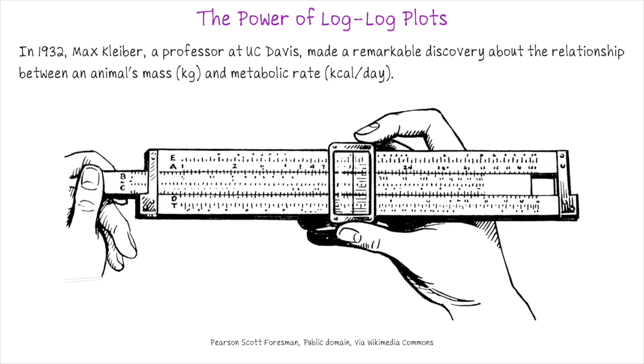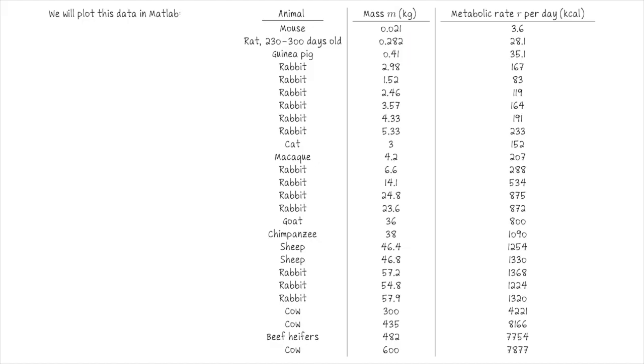The classic example of this comes from 1932 with Professor Max Kleber from UC Davis. He was a professor of animal husbandry and in particular as he was looking at animal data he realized that there was some relationship between the mass of an animal, say measured in kilograms, and what we call its metabolic rate per day, given in kilocalories. So that's the amount of calories that they consume per day. I took this set of data from a 1947 article by Max Kleber. I'm not sure it's his original 1932 data but it's pretty close.